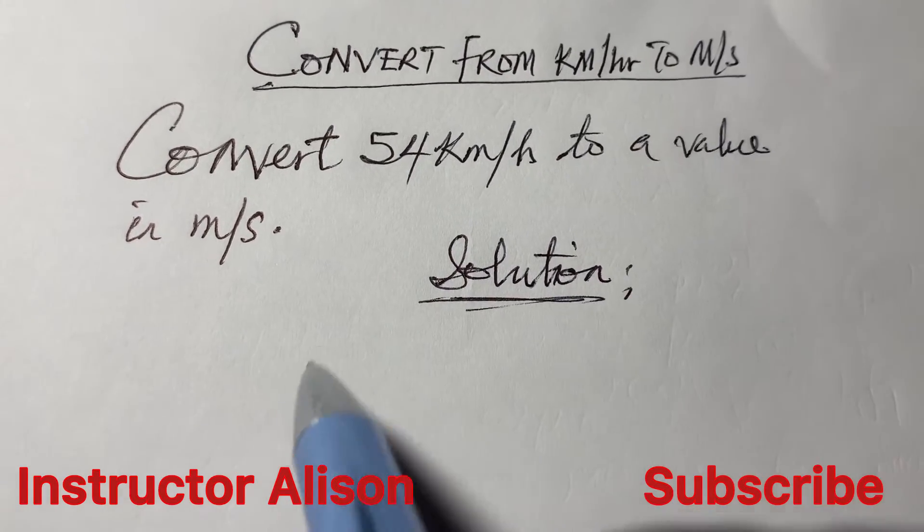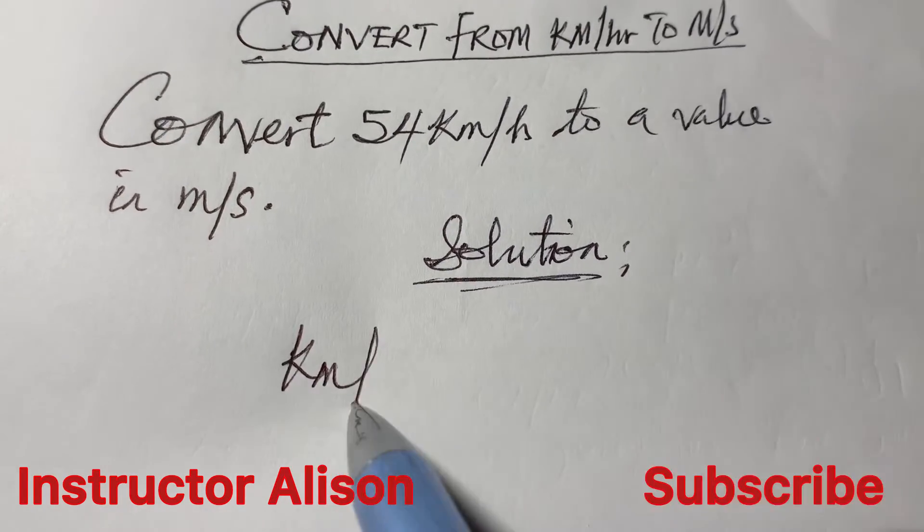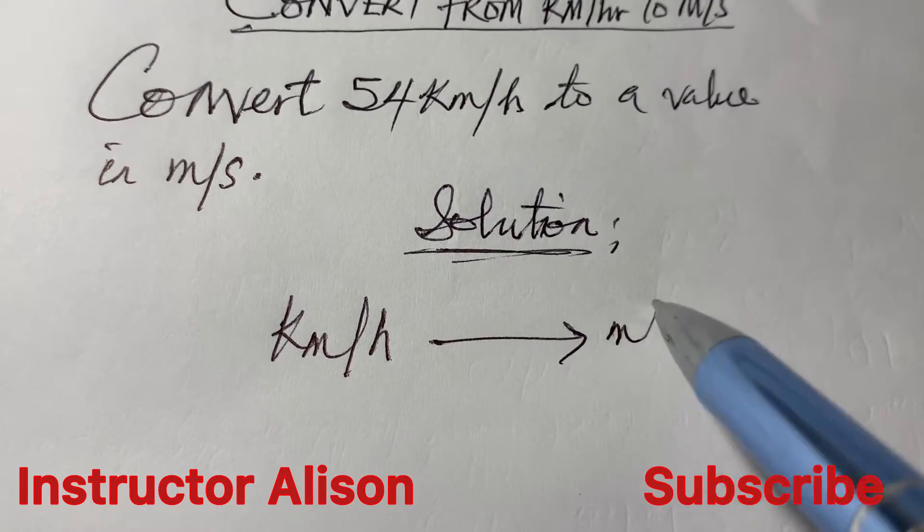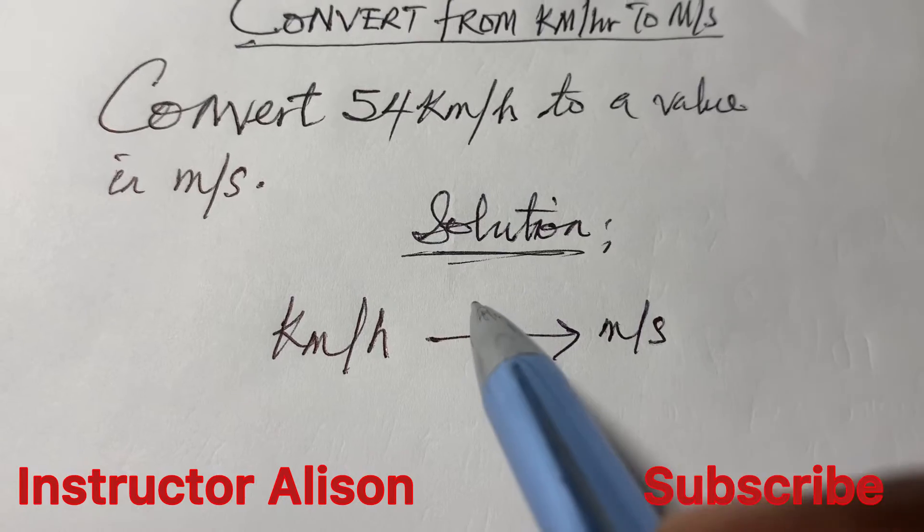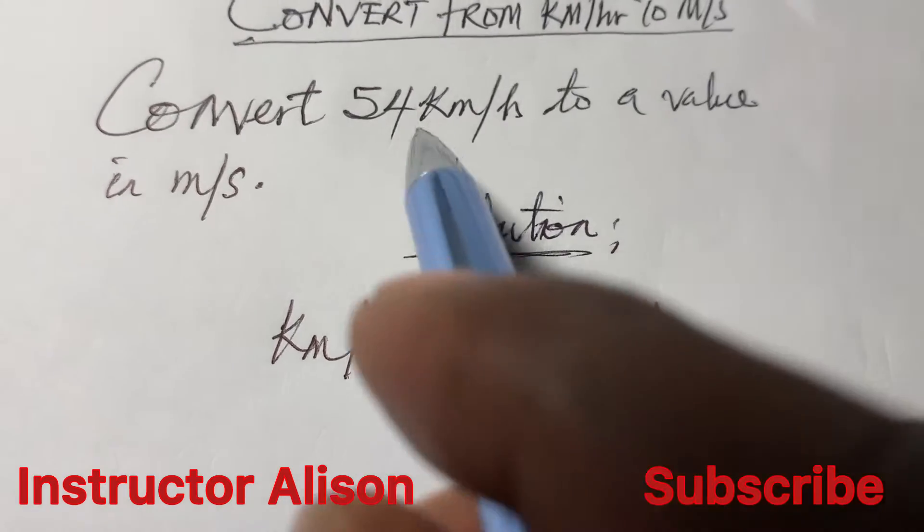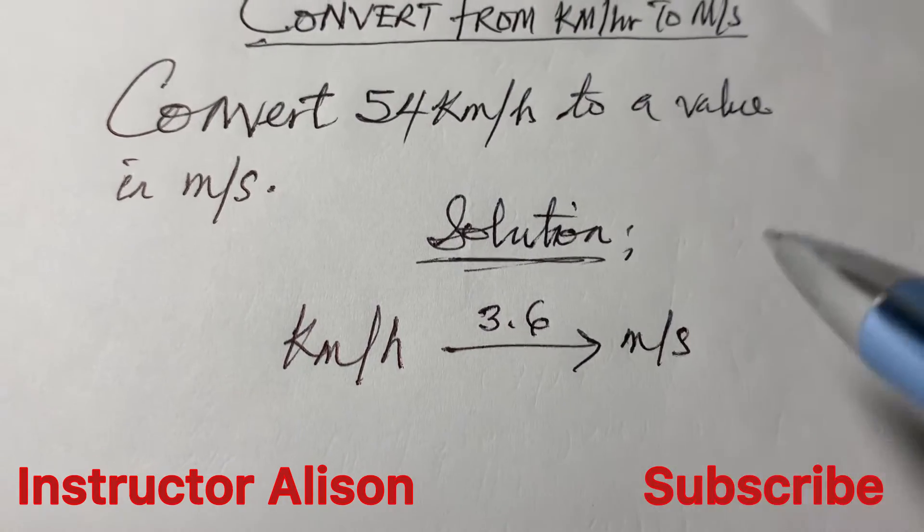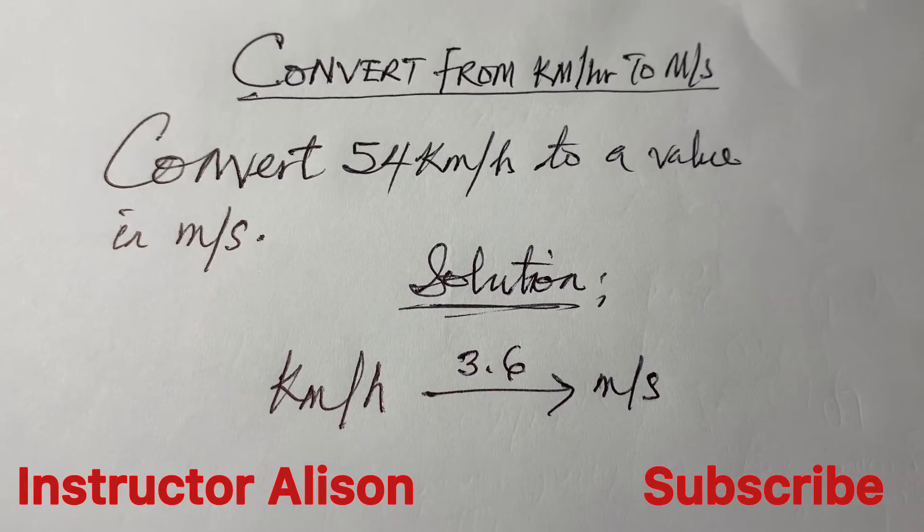So to convert from kilometer per hour to a value in meter per second, the best and simplest way you can do it is to divide the value given to you by 3.6 and you just get the answer immediately.